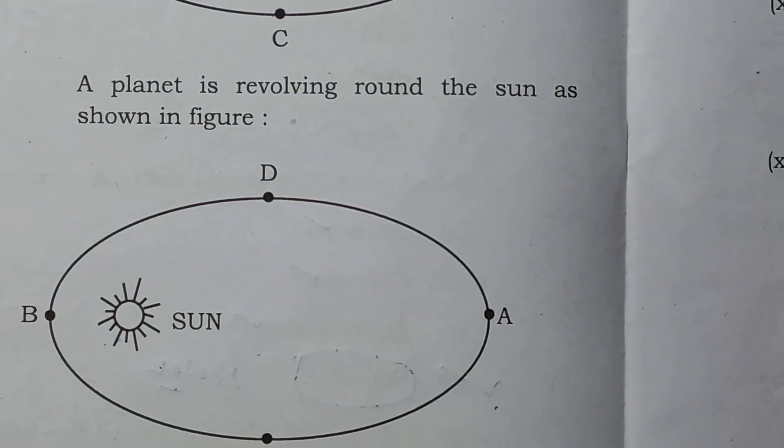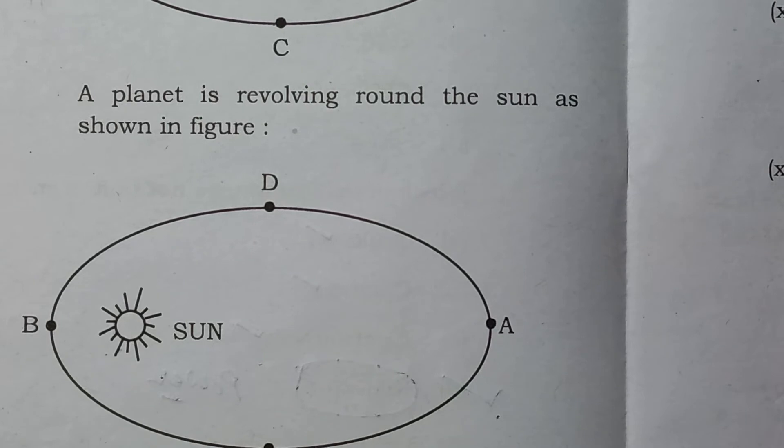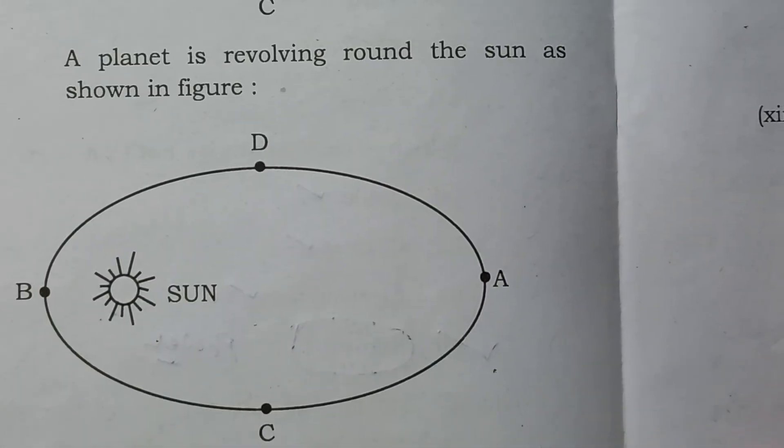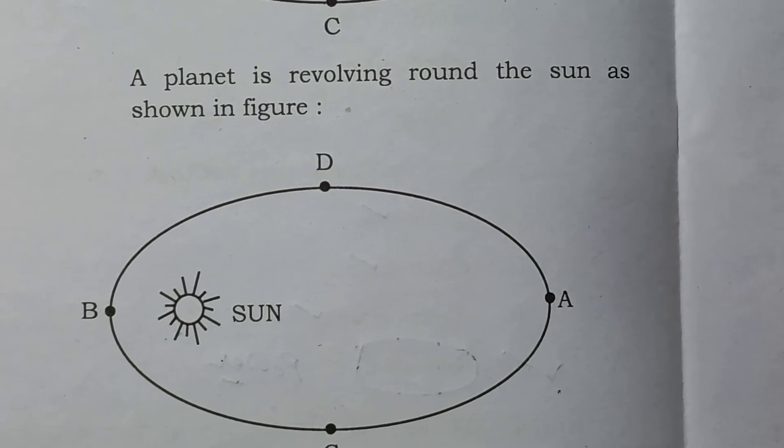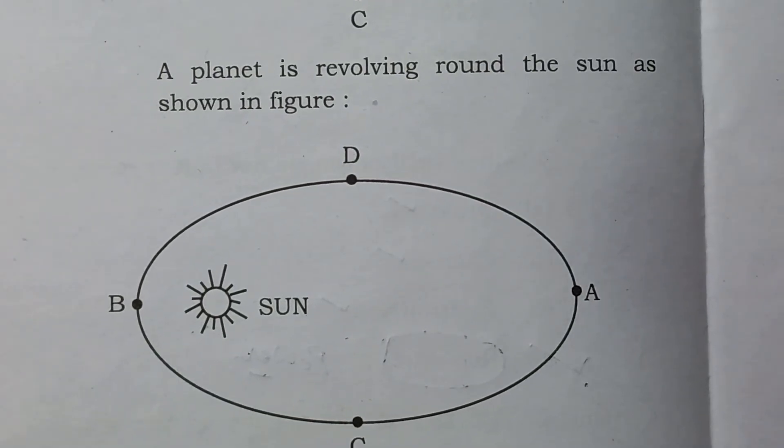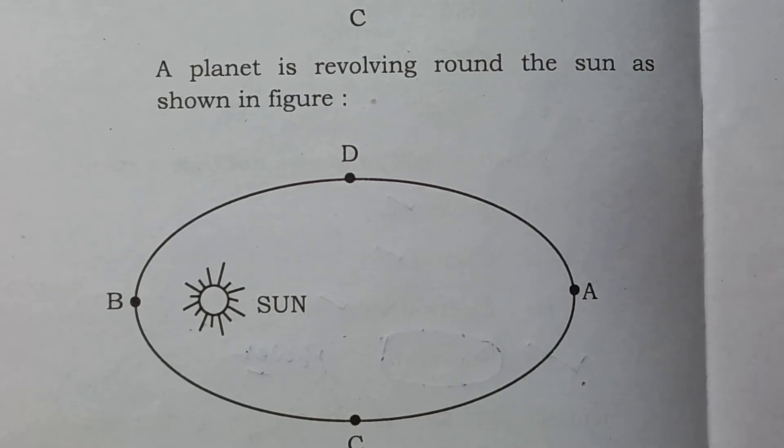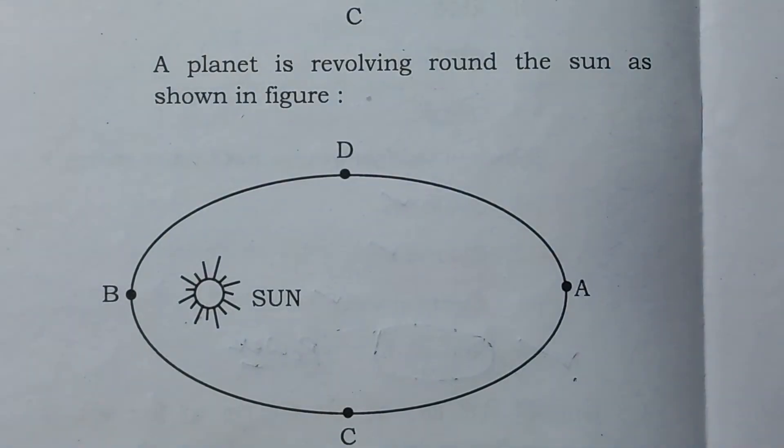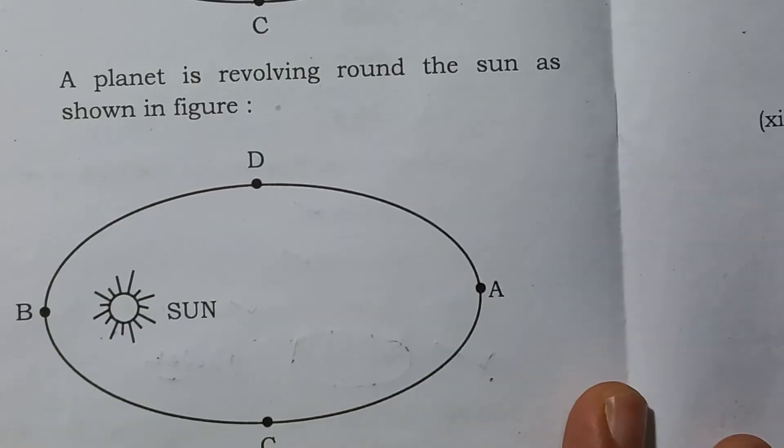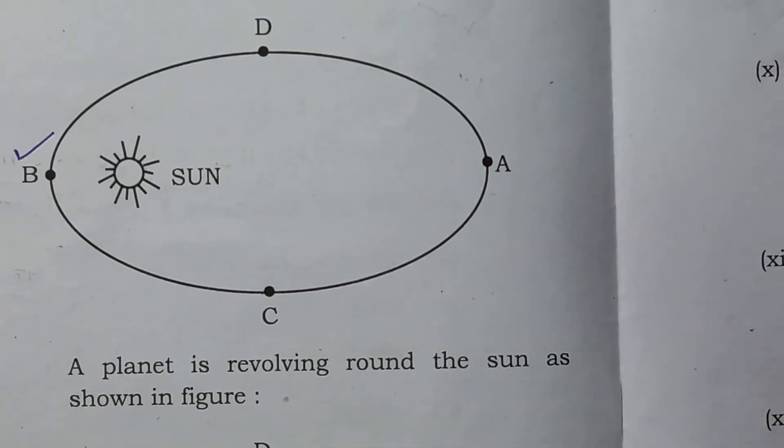A planet is revolving around the sun as follows. At which point velocity of planet is maximum. We know Kepler's second law. Velocity of planet is maximum at point B, which is closest to the sun.